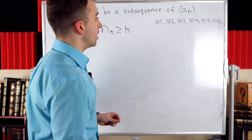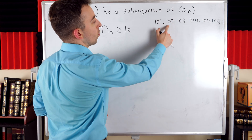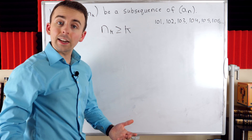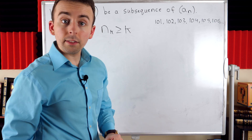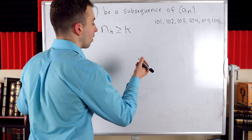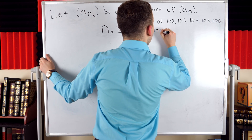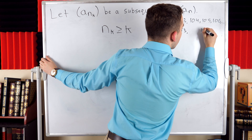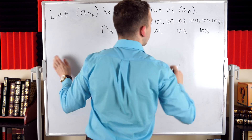Let's get concrete with an example. Consider the sequence 101, 102, 103, 104, and so on. We could create a subsequence by selecting the odd terms, so a subsequence consisting of 101, then 103, then 105, and so on.